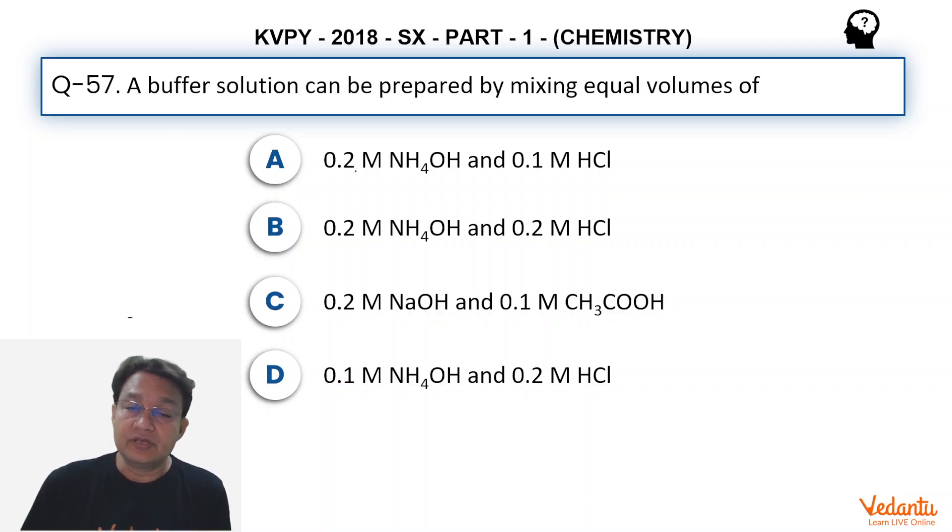Let's read the options. 0.2 molar NH4OH and 0.1 molar HCl. I think in this, HCl and NH4OH is going to react because one is base and one is acid. In this reaction, HCl is going to react with NH4OH to convert some part of it into NH4Cl.